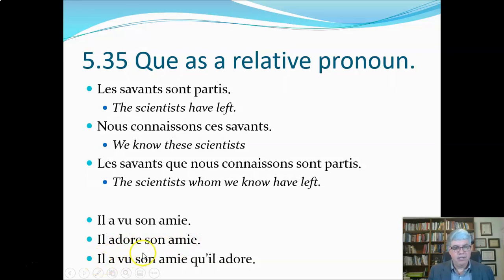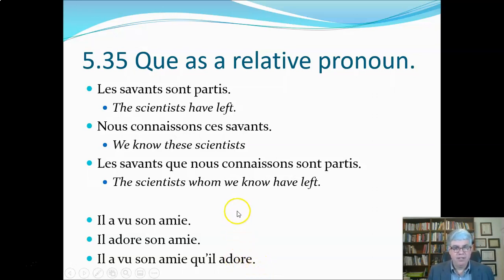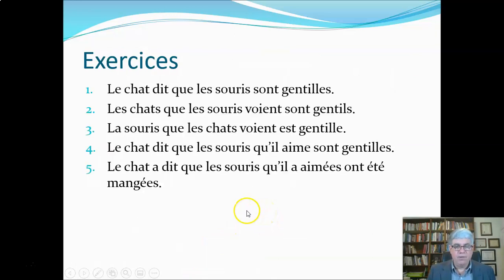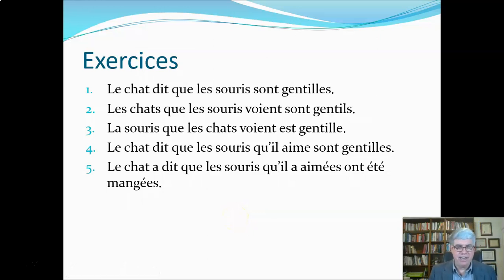We can combine two clauses without repeating 'son ami' — using 'que' as a relative pronoun — resulting in something like 'his friend whom he adores.' Work on the exercises; they all have 'que' in them. See what you get and then look at the next video to see the answers.